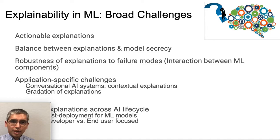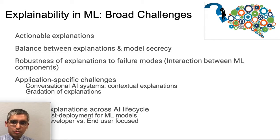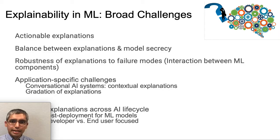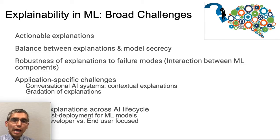How do we provide robust explanations which do not leak the secrecy of the model? The third challenge is about ensuring that the explanations are robust — in terms of robustness to different failure modes arising from the interaction between various machine learning components in a real system, or robustness to adversarial attacks. How do we ensure that the explanations cannot be fooled, or conversely that we can trust explanations which could have been generated in an adversarial manner to fool the auditor?